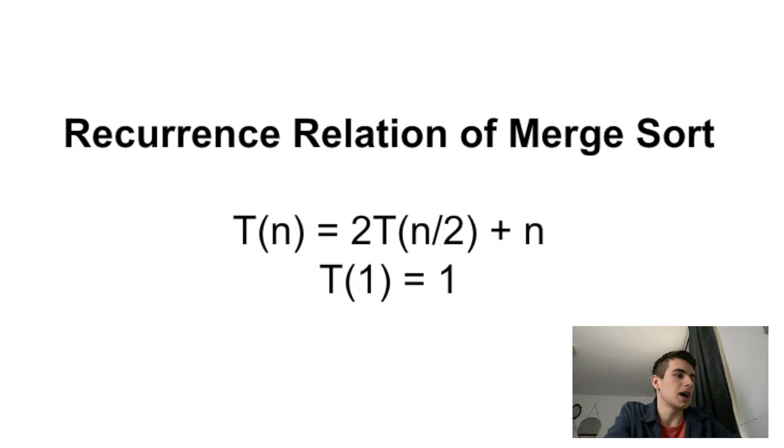So without further ado, let us look at the recurrence relation of merge sort. It's T(n) = 2T(n/2) + n, and T(1) = 1.